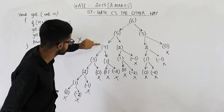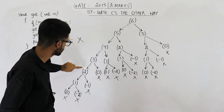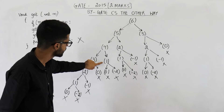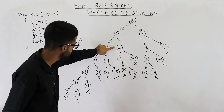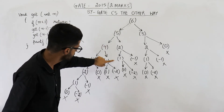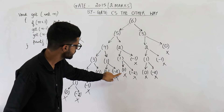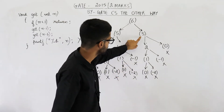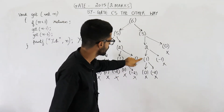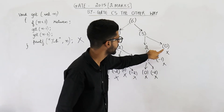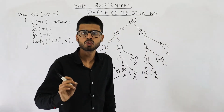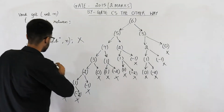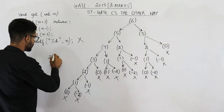Counting all the nodes in the tree: 1, 2, 3, 4, 5, 6, 7, 8, 9, 10, 11, 12, 13, 14, 15, 16, 17, 18, 19, 20, 21, 22, 23, 24, and 25. That means in total 25 function calls are made. The answer is 25.